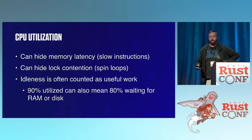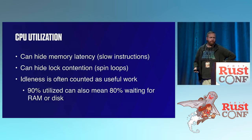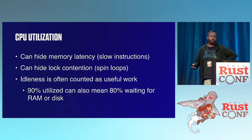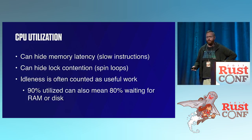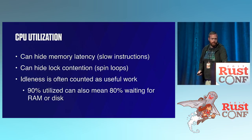An instruction can hide lock contention, like a spin loop. Idleness is often counted as useful work — when you look at top or htop you'll see 90% CPU usage, but that can also mean you're spending 80% of your time waiting for RAM or disk.